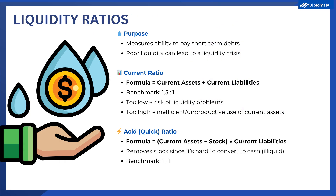The second part of this topic has to do with liquidity ratios. Liquidity ratios effectively measure the extent to which a firm can use its current assets to pay off its current liabilities — effectively its short-term debts. Firms with poor liquidity ratios might face a liquidity crisis, which is when a firm can't pay back its short-term debts because it doesn't have enough current assets. There are two liquidity ratios you need to know, and these will be given to you on your final exam on the formula sheet.